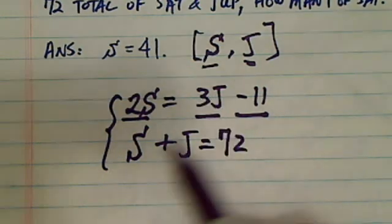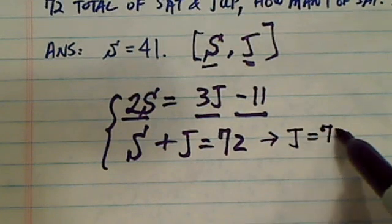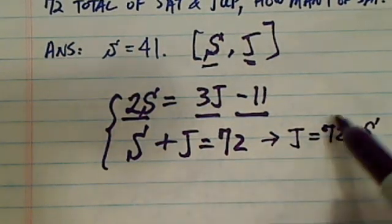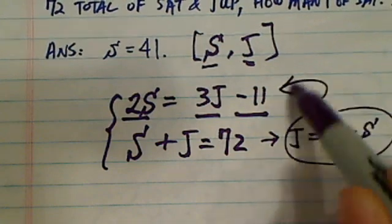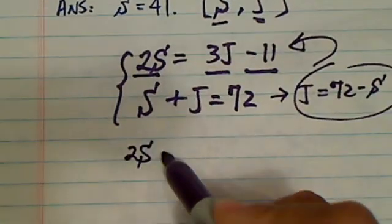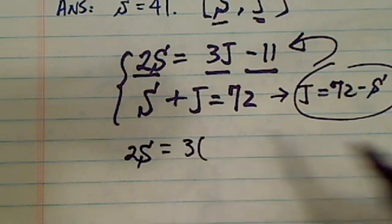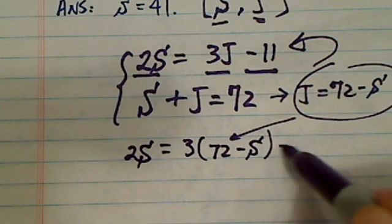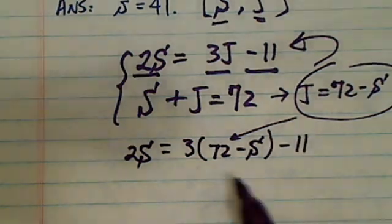Now since we're looking for S here, we can say J is equal to 72 minus S. And then we're going to take this one, substitute it back into the first equation, and we're going to solve for S. So you have 2S equal to 3J. What's J? J is 72 minus S and then minus 11. Okay, so I just did a substitution.